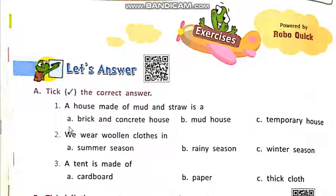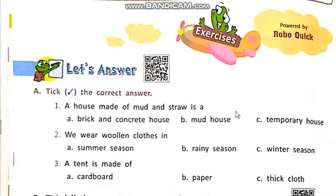Number 1. Option A: a brick and concrete house. Option B: mud house. Option C: temporary house. A house made of mud and straw is called a mud house. The correct answer is option B.